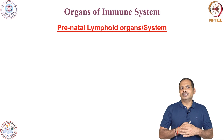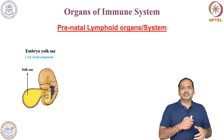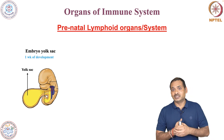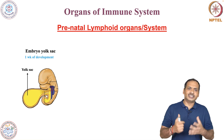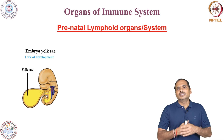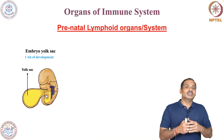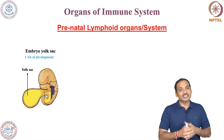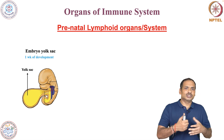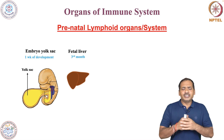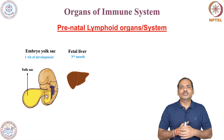The immune system starts immediately after conception, when the baby is in the development or prenatal stage. After about one week, the yolk sac is formed, which is the site for the development of blood cells and immune cells. These immune cells take care of the developing fetus's immunity, besides the mother's immune responses. After about three months, immune cell production is taken over by the fetal liver.